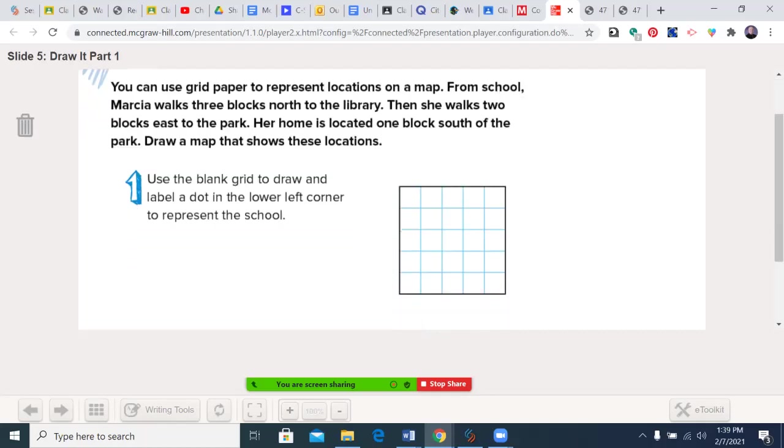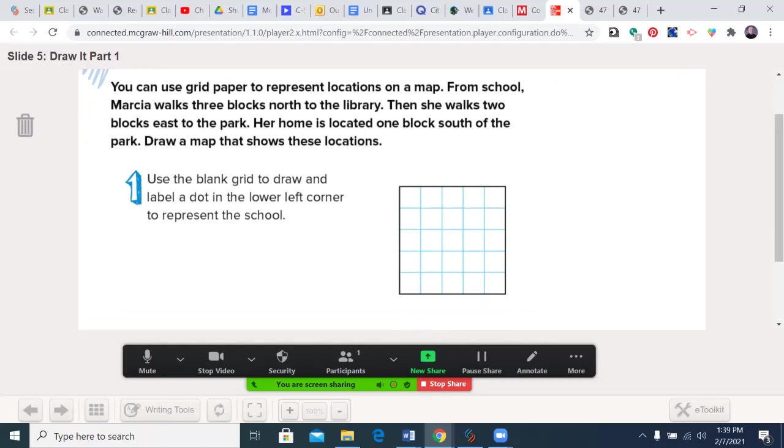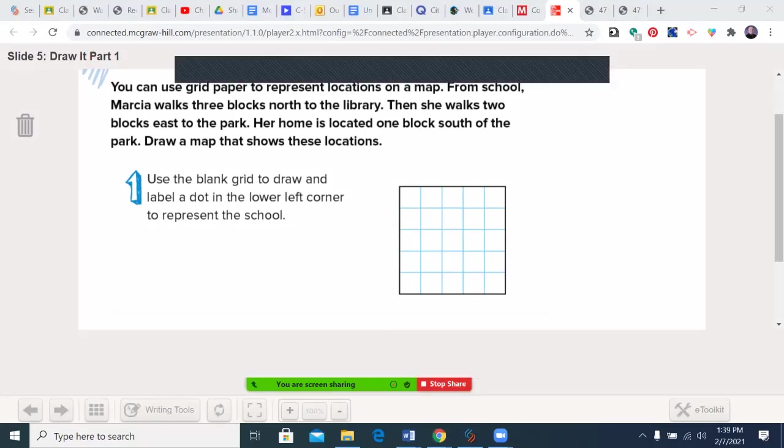You can use grid paper to represent locations on a map. From school, Marcia walks three blocks north to the library. Then she walks two blocks east to the park. Her home is located one block south of the park. Draw a map that shows these locations. I'm going to grab an annotation tool—you should use a pencil. Use a blank grid to draw and label a dot in the lower left corner to represent the school.